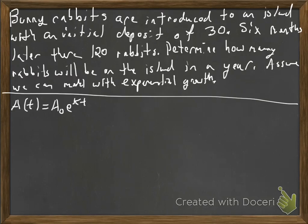So what we're going to look at here is, we're going to write down some things that we know. So I know that our initial deposit is 30. I know in six months, there are now 120 bunny rabbits. I don't know what the k is. And what I'm trying to find is, I'm trying to find how many bunny rabbits there are in a year. So I would use t as 12 for 12 months, but I don't know what the k is.